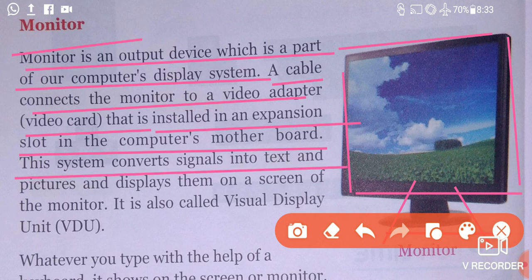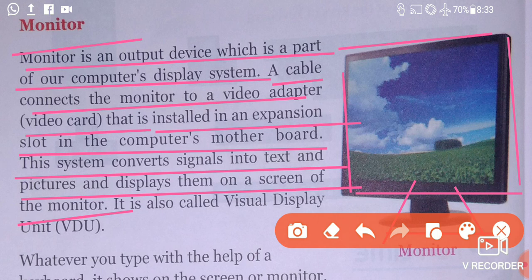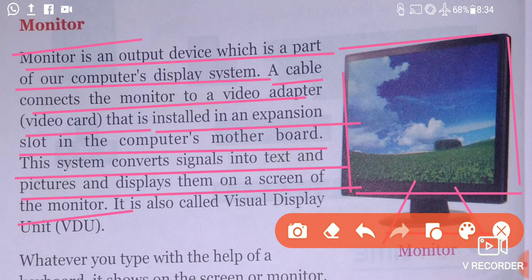This system converts signals into text and pictures and displays them on the screen of the monitor. When we type something on a computer, for example your name Rahul — R-A-H-U-L — the computer accepts it in binary code. But when you see it on the monitor, it converts it back into text.